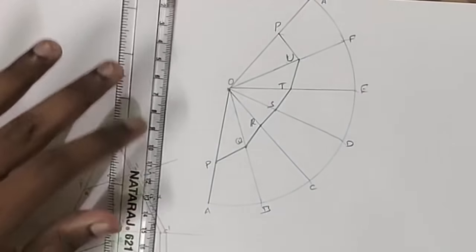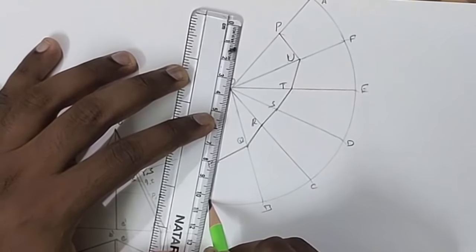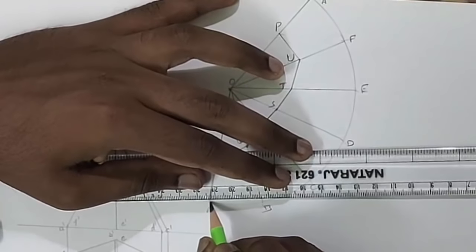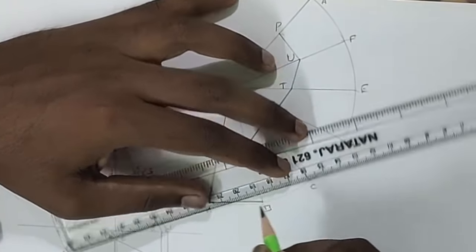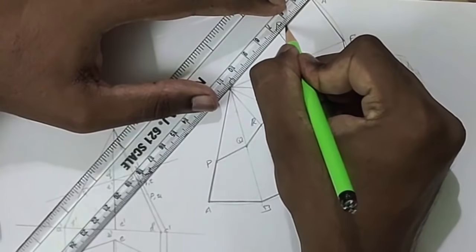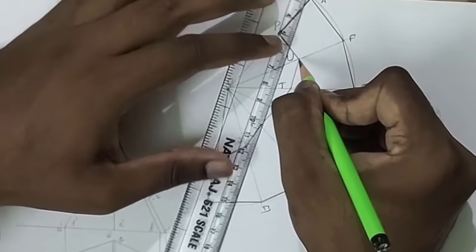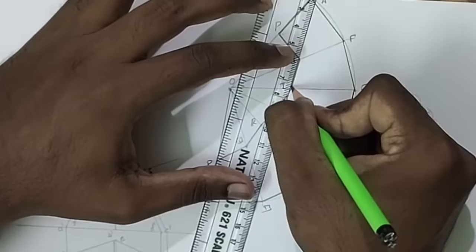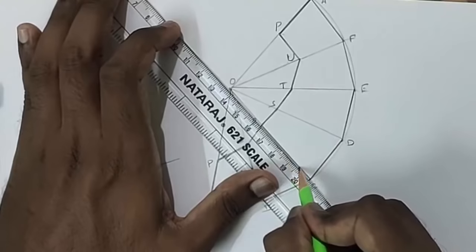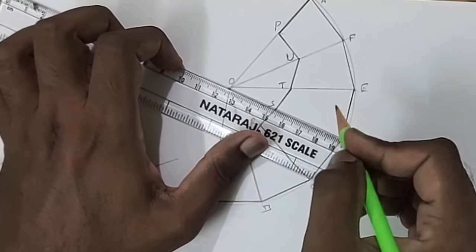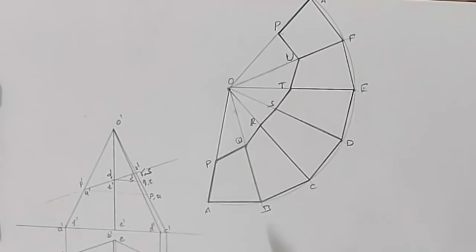Now we have connected all the points. Then above those points, the solid is removed. And below this point, the solid is retained. So we have to retain and darken all the edges below this. Now we have darkened the portions below this.